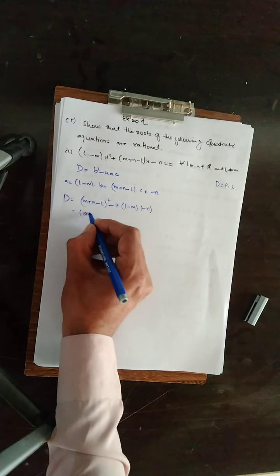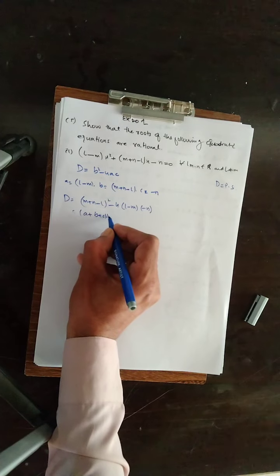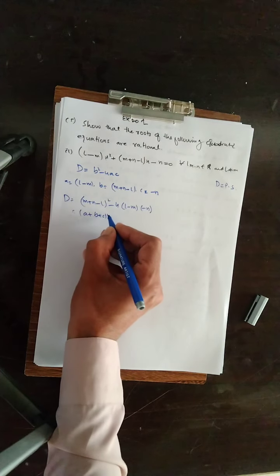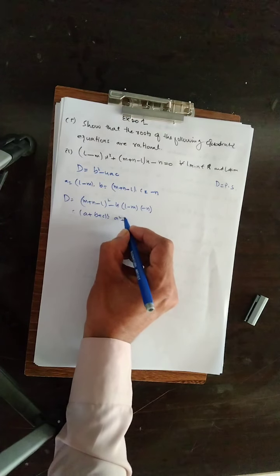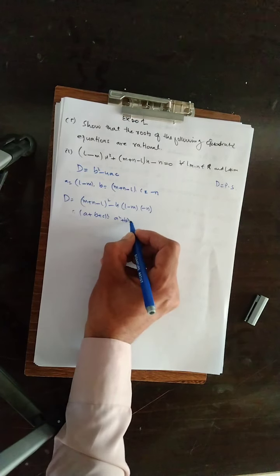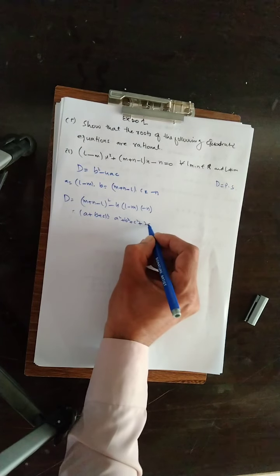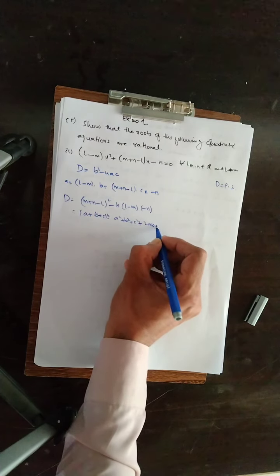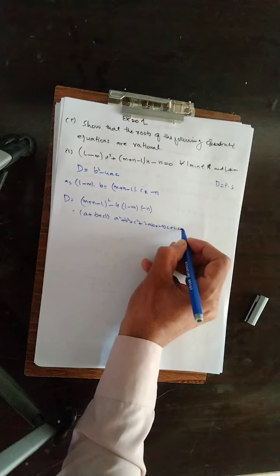تین values کو square کرنے کے لیے formula استعمال کریں گے: (A + B + C)² = A² + B² + C² + 2AB + 2BC + 2CA۔